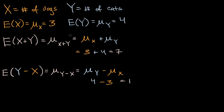Now, the example I've just used involves discrete random variables — on a given day I wouldn't see 2.2 dogs or pi dogs. The expected value itself does not have to be a whole number, because you could of course average it over many days. But this same idea — that the mean of a sum is the same as the sum of means, and that the mean of a difference of random variables is the same as the difference of the means — applies broadly. In a future video, I'll do a proof of this.